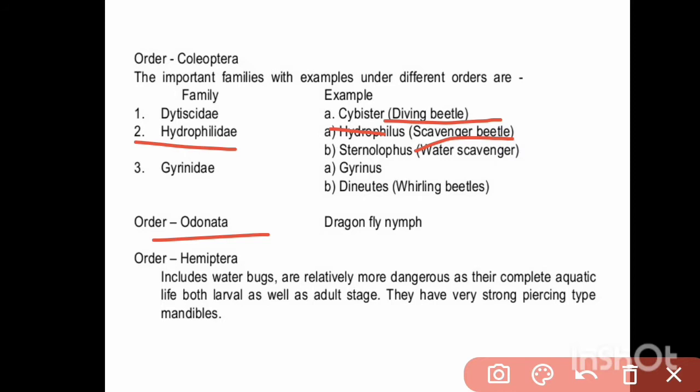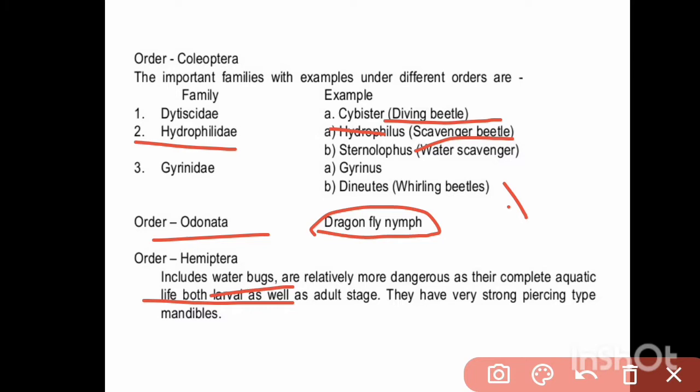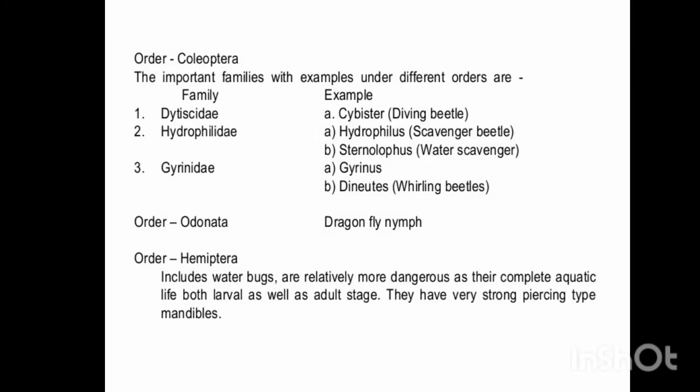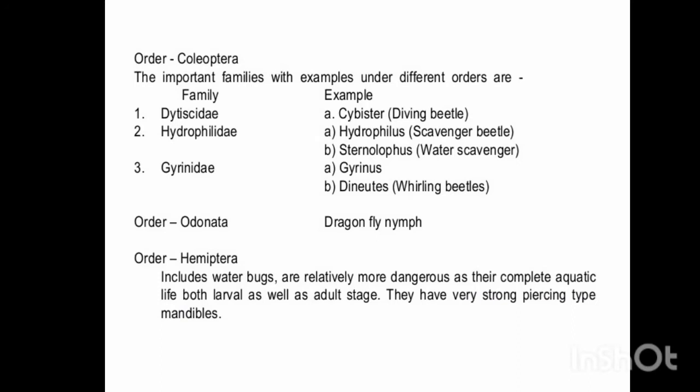Our next order, Hemiptera, includes water bugs which are relatively more dangerous as their complete aquatic life — both larvae as well as adults are completely aquatic. In the exam, you can be asked which order has an entire life cycle that is completely aquatic — remember, it is Hemiptera. They have very strong piercing mandibles.